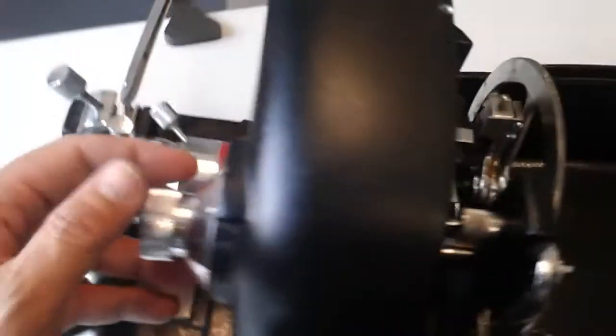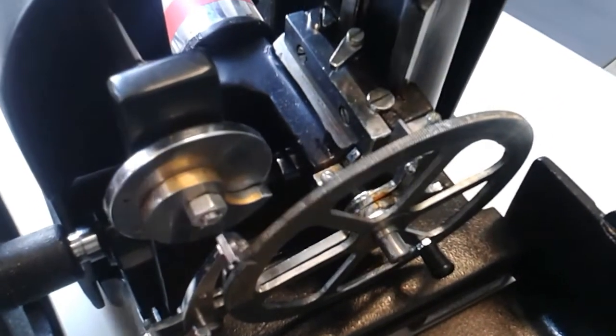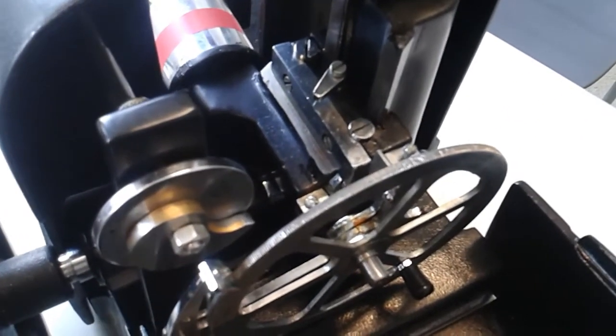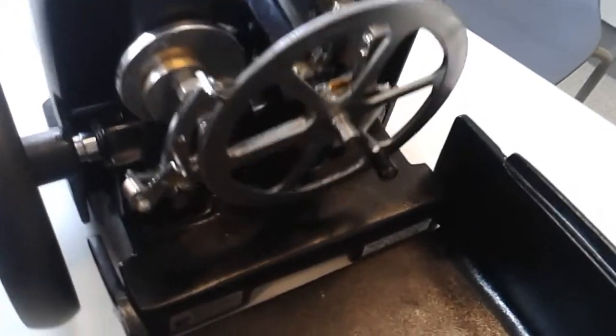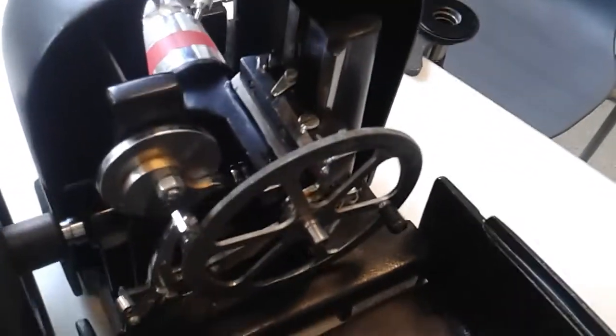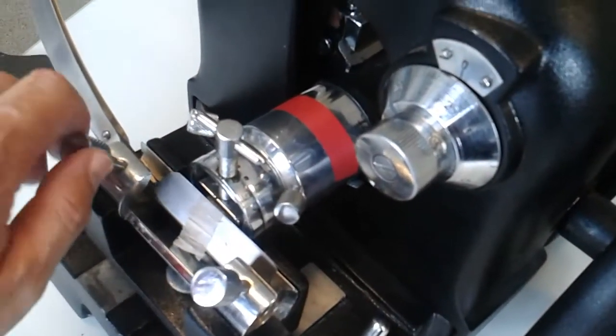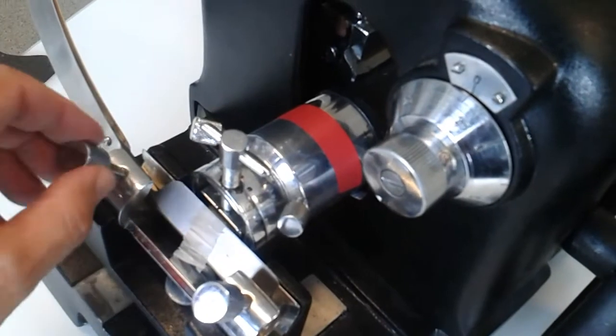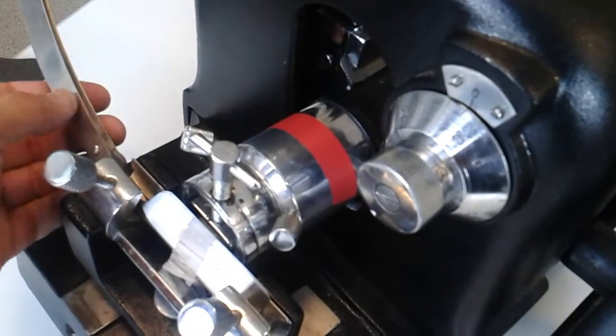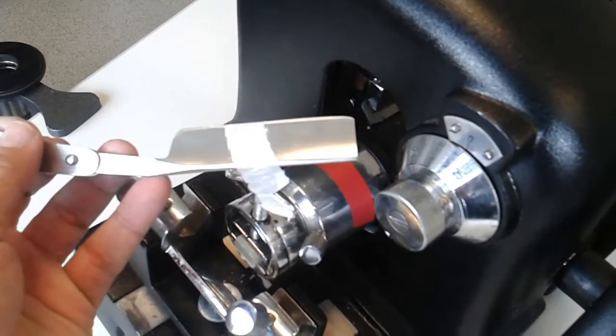By turning this wheel over here, you can adjust this part, which then adjusts the thickness of the specimen. The rotary microtome knife itself can be removed by unscrewing these two screws over here, then you can carefully remove the knife and store it in a safe place.